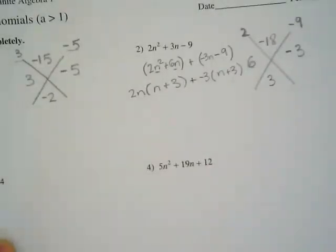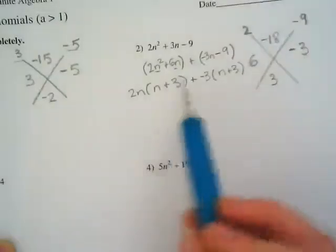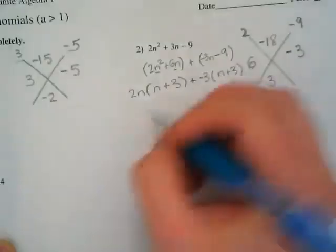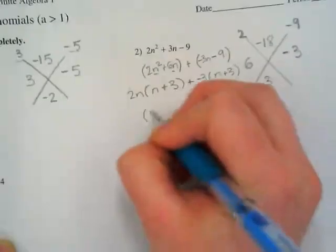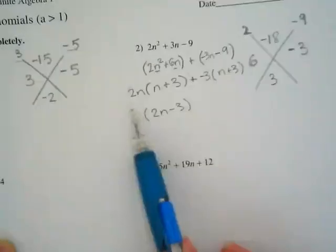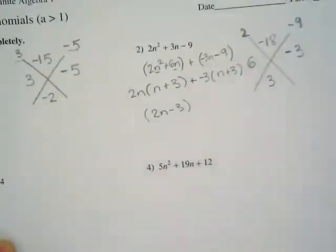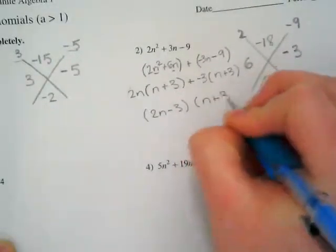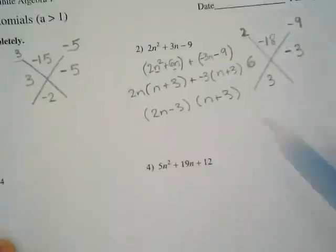So now I can rewrite it as a product, because these two terms share a common factor, n plus 3. So I can rewrite it as 2n minus 3, which is the sum of my greatest common factors, multiplied by n plus 3, which is the factor left over.